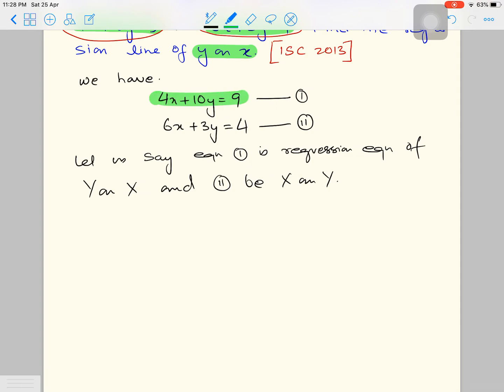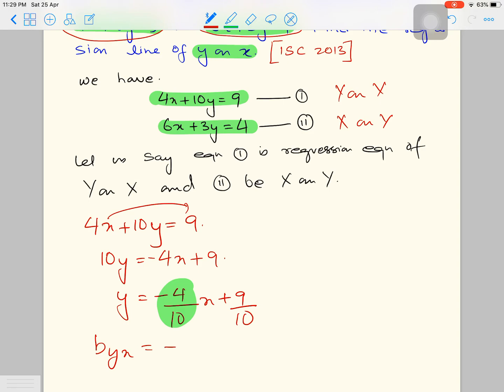Since this is y on x and the other one is x on y, we can extract b_yx from the first one. So here we have the first equation. We will extract b_yx. For that, we need to transpose x to the other side. So we have b_yx equals to minus 4 by 10.